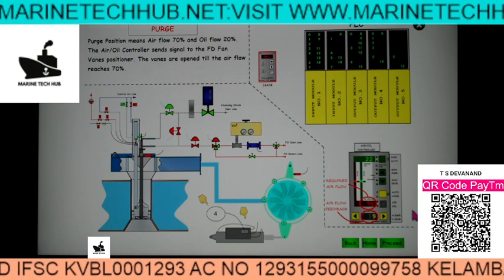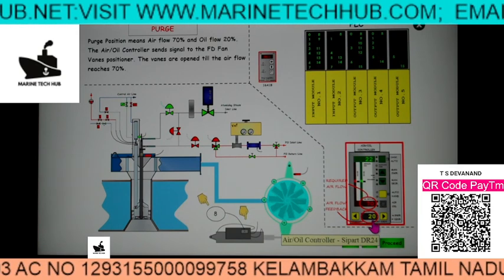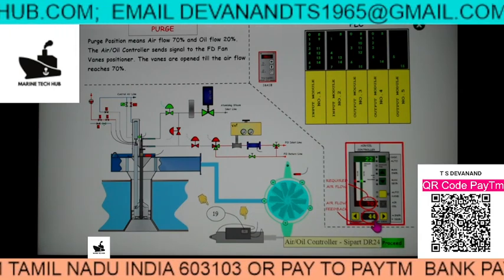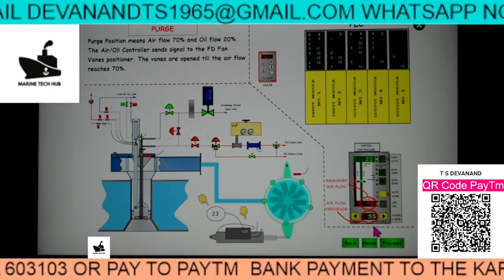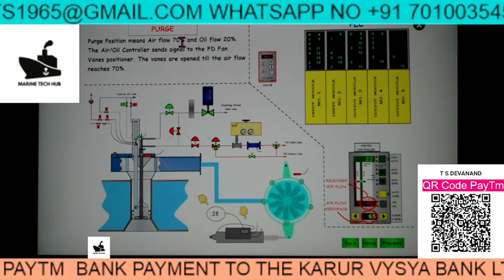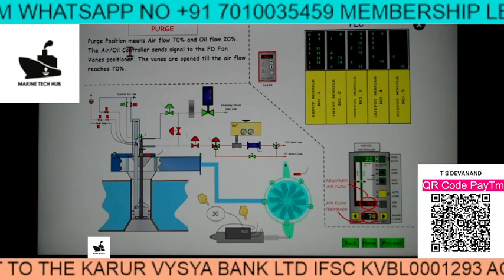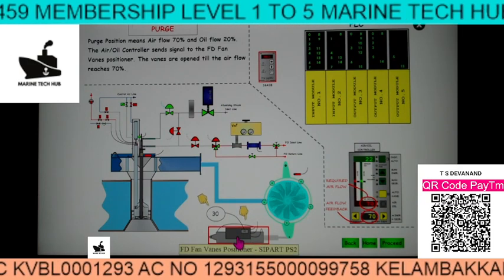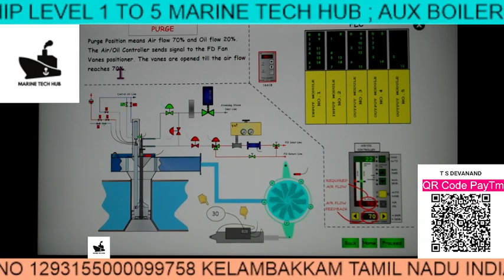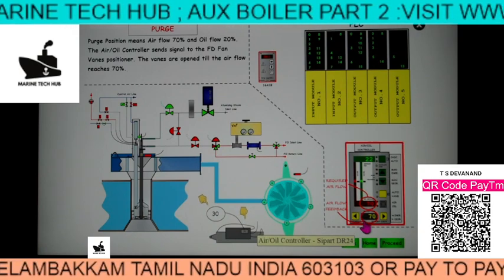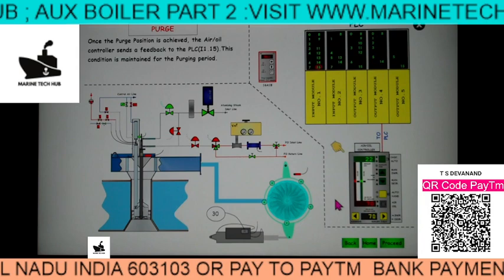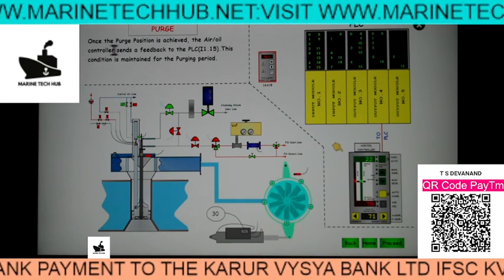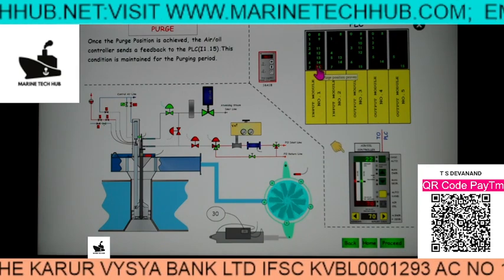Once the purging position of 70% is achieved, the air oil controller sends a signal to the PLC at 1.15 — this means 'purging positioner.' Now we need to give the ignition position. The FD fan vane is closing up and will come to 20%. Once it comes to 20%, that means we are ready to fire the pilot burner. At ignition position both air and oil are at 20% for firing. The controller signal and vane positioner are both checked to confirm the position has come to 20%.